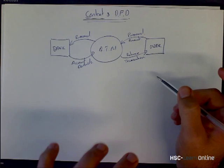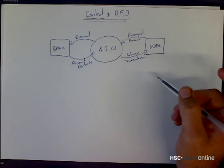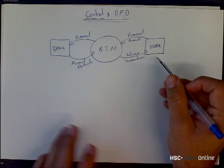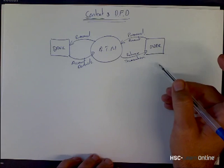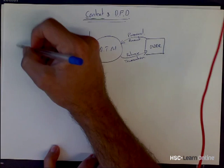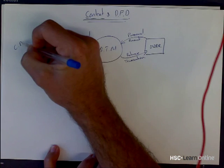So it's a very high-level overview of the entire system and some of its external entities. That's a context diagram.